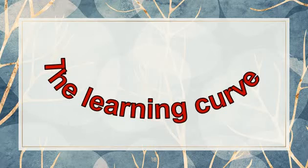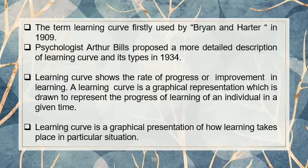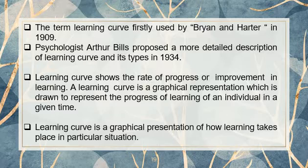After some time, if the learning process continues, the curve again rises, showing further improvement — this is the secondary spurt in learning. Finally, there is a limit for the learning curve beyond which no individual can push it higher, set by total physiological and psychological conditions. The term 'learning curve' was first used by Baryan and Herter in 1909. Psychologist Arthur Bills proposed a more detailed description of the learning curve and its types in 1934. A learning curve is a graphical representation of how learning takes place over time.